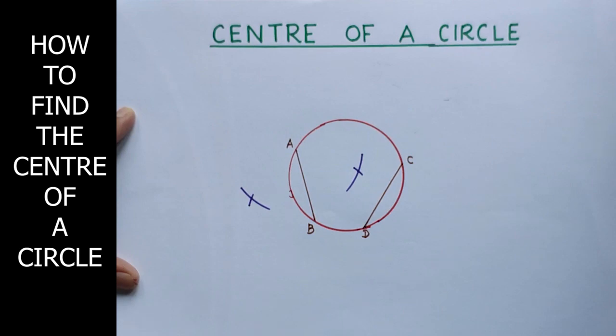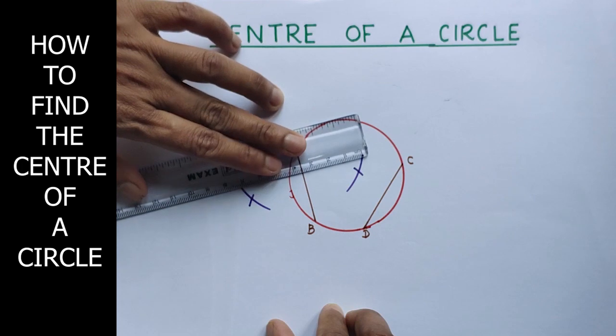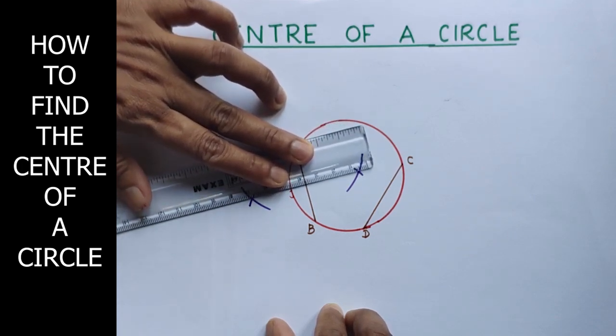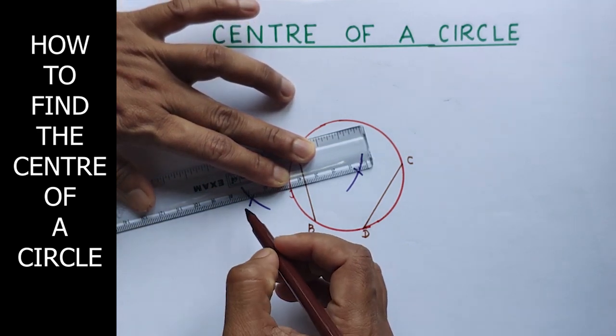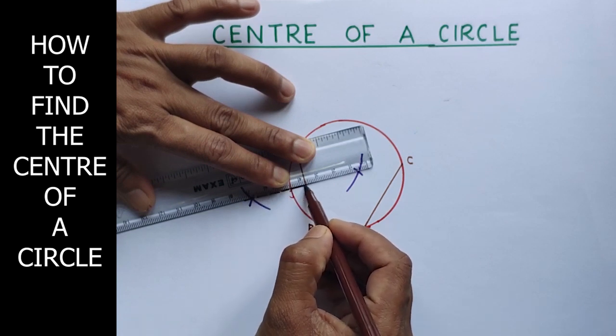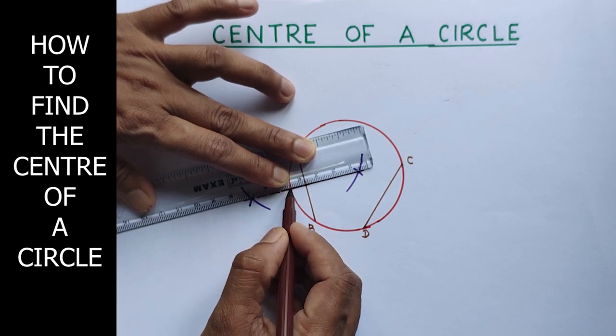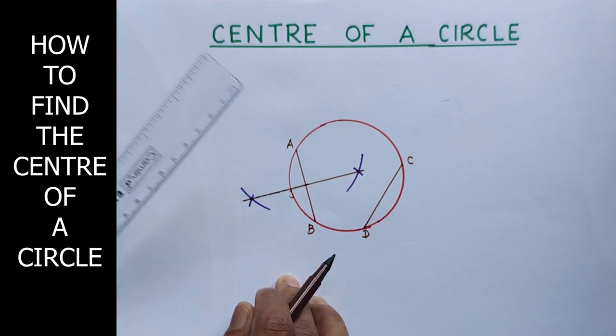We got the intersecting points. And join these two intersecting points. We will get the perpendicular bisector. See, this is the first perpendicular bisector. That is the perpendicular bisector of AB.